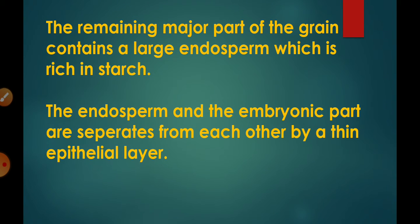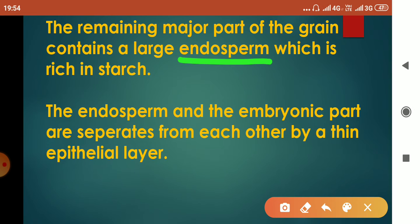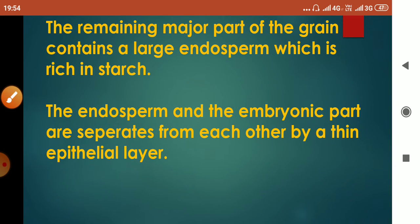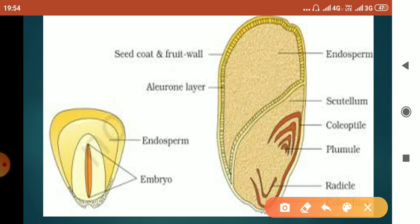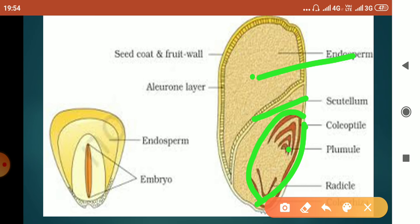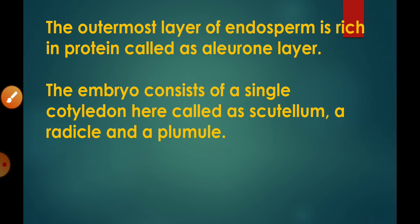The remaining major part of the grain contains a large endosperm which is rich in starch — that is why it is a nutritive tissue providing nourishment to the developing embryo. The endosperm and the embryonic part are separated from each other by a thin epithelial layer.